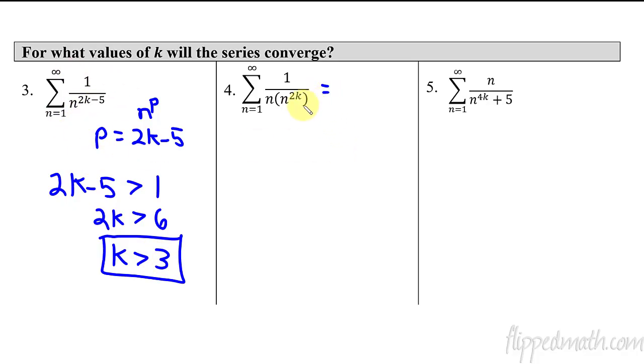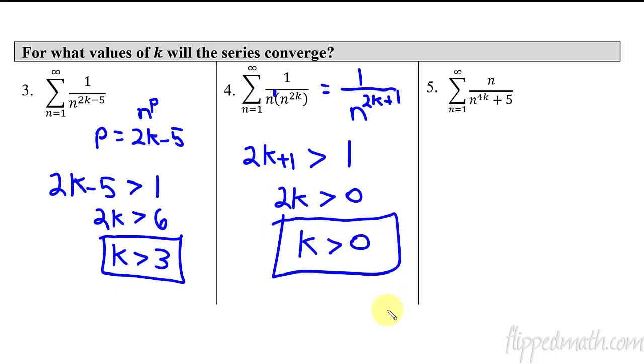All right, now this one. So I'm going to write this one out as, you might have to do some manipulation first before you start thinking through this. So this is the same thing as n raised to the 2k plus 1. And why is that? Because remember, this is back in pre-algebra, way back in middle school, where if you're multiplying bases that are the same, you add their exponents. So it's 2k plus 1. So that means that's my p, the exponent is 2k plus 1, and I want 2k plus 1 to be greater than 1. And so then once you have that set up, you just solve it from there. And you end up with k is greater than 0. As long as k is greater than 0, this thing's going to converge.